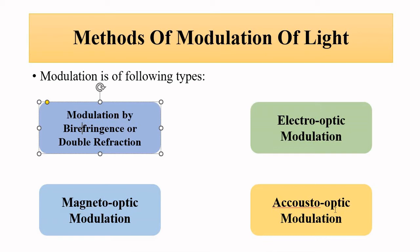Fourth, acousto-optic modulation, where a piezoelectric transducer produces sound waves of a particular frequency, causing a change in the refractive index of the medium. As a result, the light wave gets scattered by atoms in the propagating medium and undergoes Bragg diffraction, deflecting it by a certain angle. These are the basic principles of modulation of light, to be discussed one by one in separate videos.